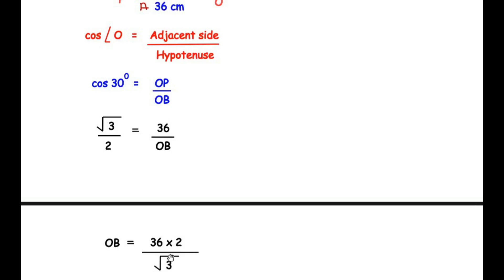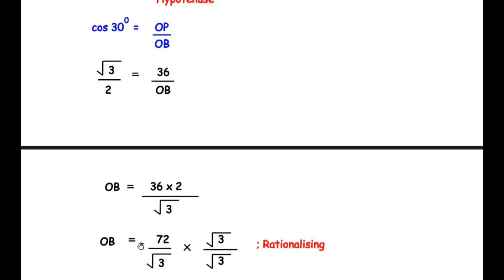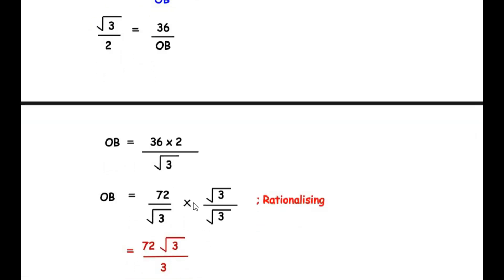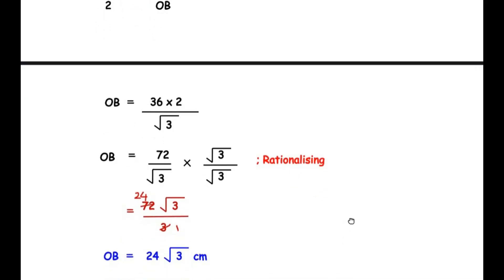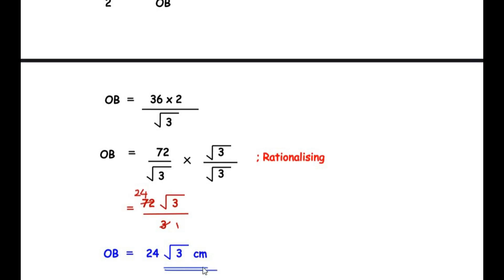So OB = 72/√3. Since the denominator is a square root, we rationalize by multiplying numerator and denominator by √3: OB = (72√3)/(√3 × √3) = 72√3/3. Dividing 72 by 3 gives 24. Therefore, the length of wire OB is 24√3 cm.